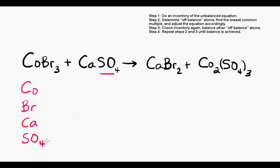Here's a balancing tip for you. If you ever have a polyatomic ion that exists on both the left and right side like it does here, keep it intact instead of breaking it down into its elements. This will keep your inventory a lot less complicated. I'm going to complete the inventory here.